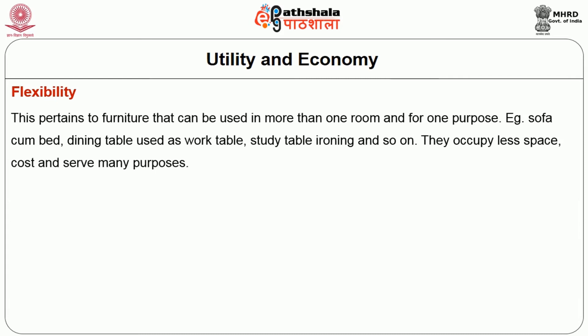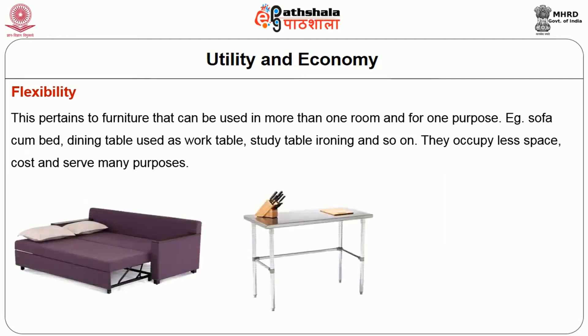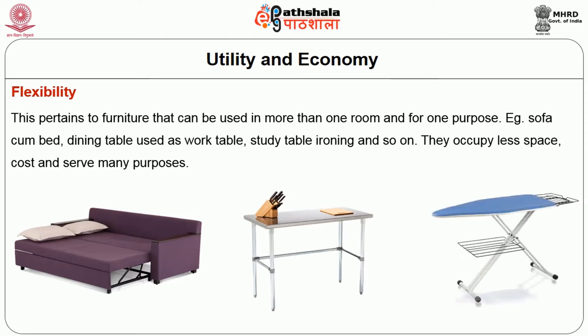Flexibility pertains to furniture that can be used in more than one room and for more than one purpose. Examples include sofa-cum-bed, dining table used as a work table, study table used as an ironing surface and so on. They occupy less space, cost less and serve many purposes.